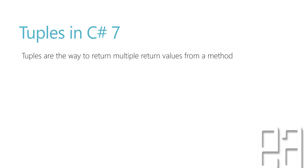What is tuples and why are we really going for tuples? In a very short sentence to say, tuples are the way to return multiple return values from a method. This was one of the most important features which any person will ever require — to return multiple values, not just returning one simple value from a method. But do we really have this kind of feature before in C#, like C# 6 or C# 5?